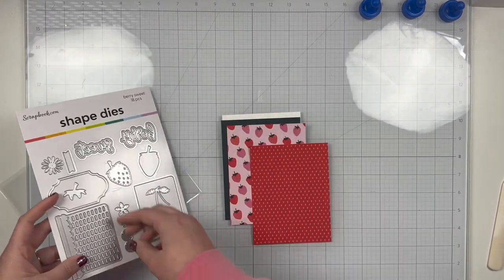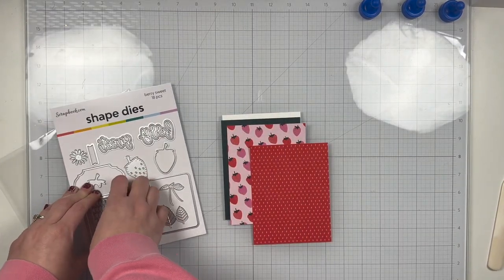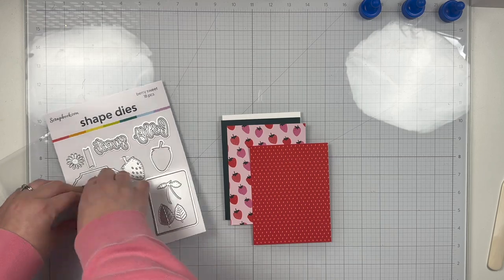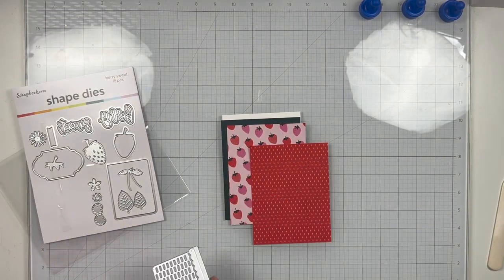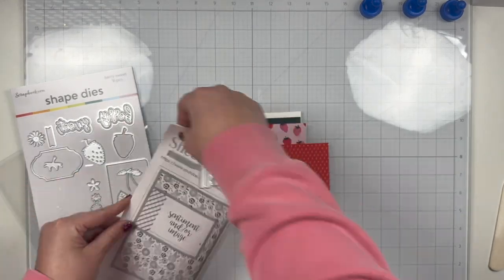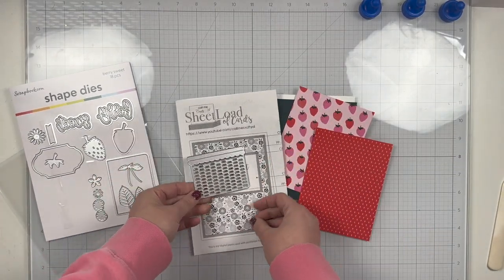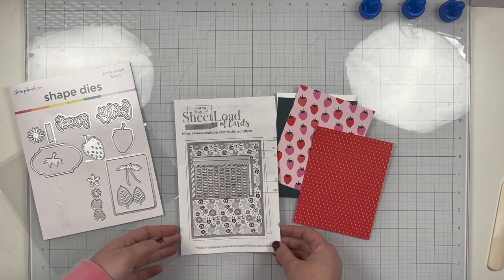And I picked out some of my favorite papers from the Berry Sweet paper pad, as well as that dark green piece of cardstock from the Christmas paper pad. I thought it matched really well with the greens on those strawberries on that print. That's my favorite print. I think they are adorable.